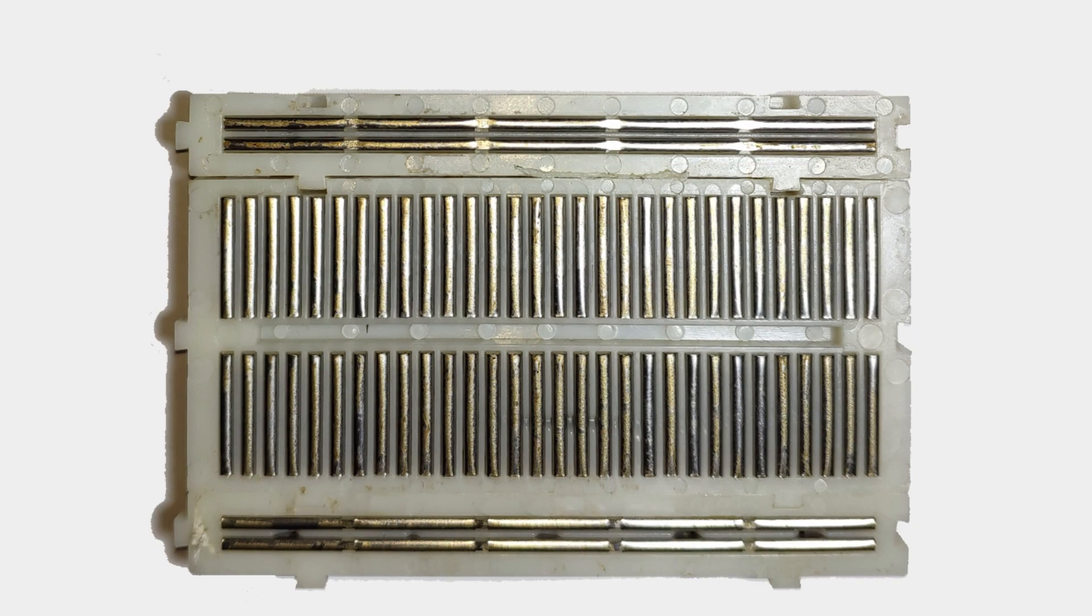The breadboard contains multiple sets of shorter rows called bus strips. These strips are interconnected in columns and are used for creating connections between electronic components. Each row in the bus strips is typically electrically isolated from its neighboring rows,